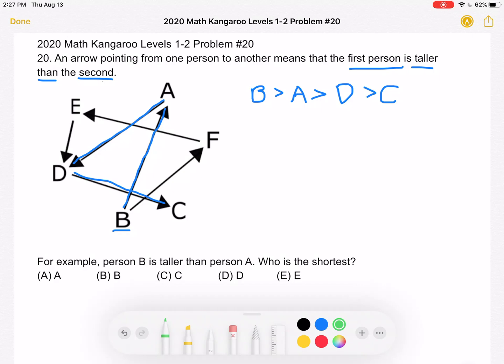Now we can follow another so-called path. There's an arrow going from B to F, which means that B is taller than, again I'm using a greater than symbol, is taller than person F.